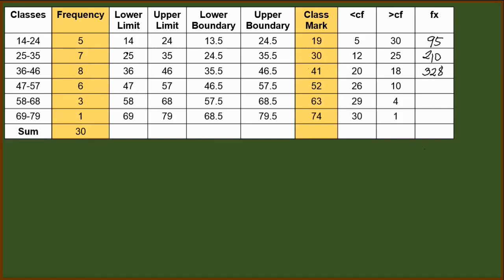Next, for 6 and 52, multiplying them, we will have a product of 312. Next, 63 and 3, multiplying them, we have 189. And finally, we have 1 times 74 is 74.